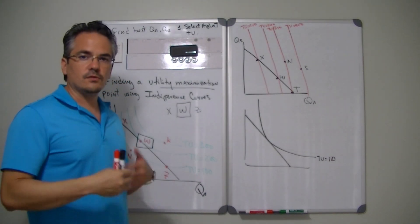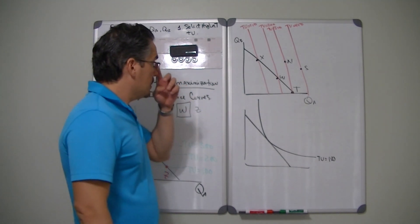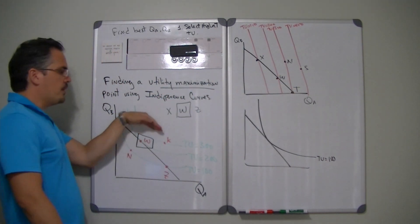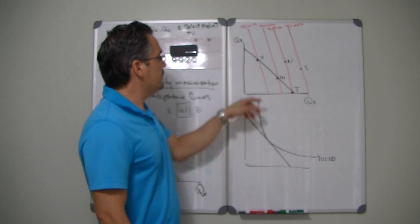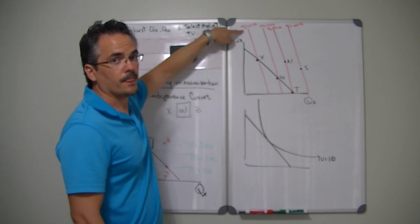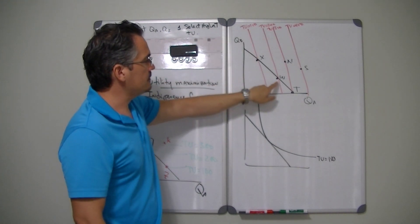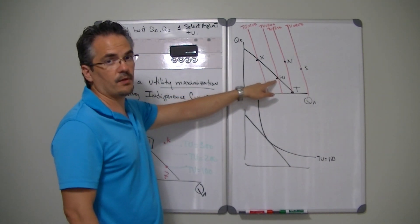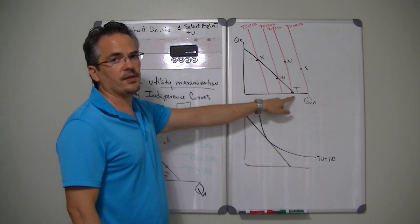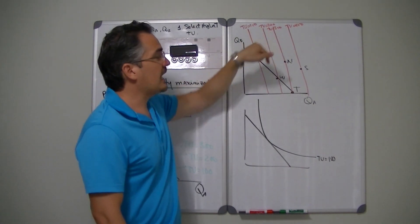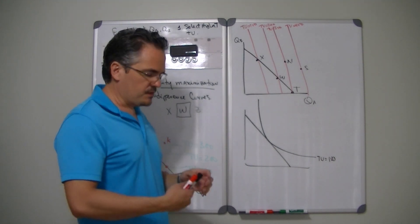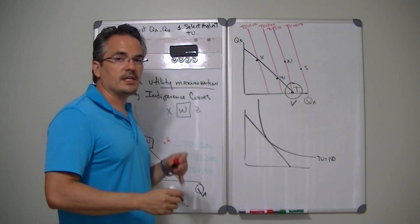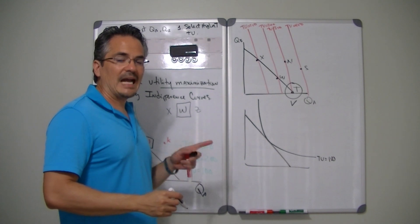Now if you are following the same logic for utility maximization, notice that you cannot select point N or point S because those points are above your budget. If you select point X, the only happiness level you're getting is 100, and you could do better by moving to a higher utility. You could pick point W — point W will give you a higher total utility and still stay within your budget. But you could do even better by selecting point T, because point T is within your budget but at a higher total utility level. So in this particular case, point T is the winner — you get the highest utility level and you stay within your budget.